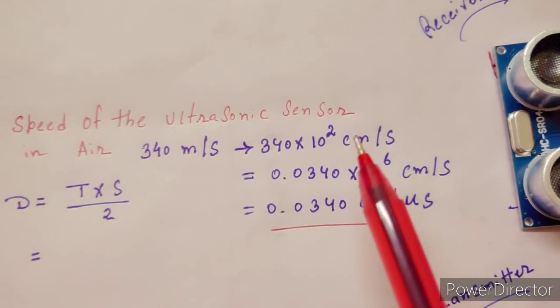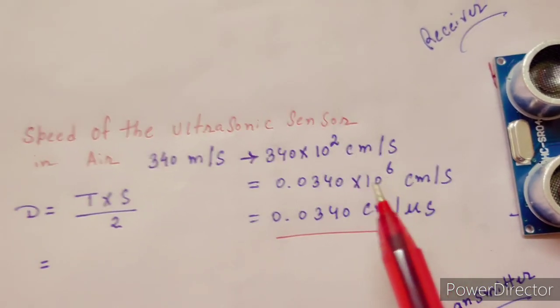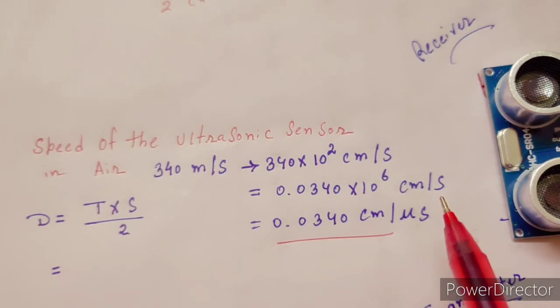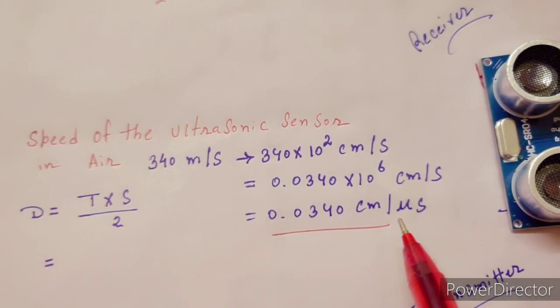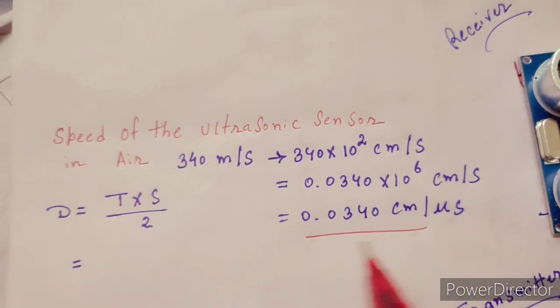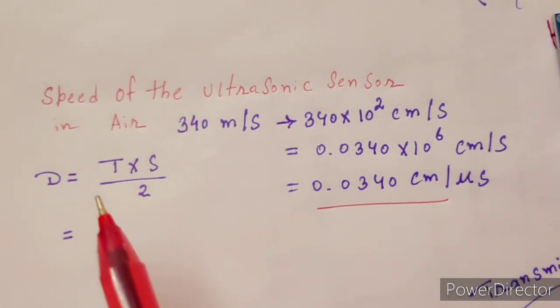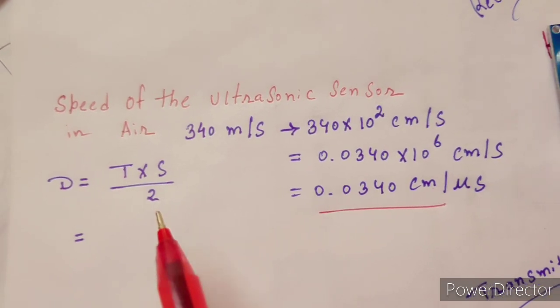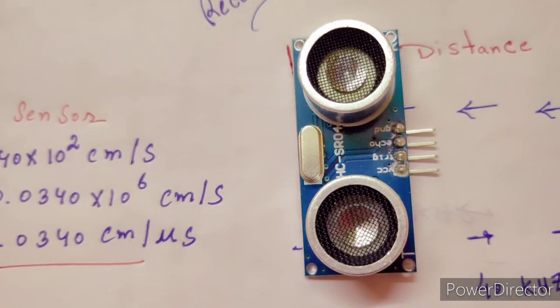So 340 times 10 to the power 2 centimeters per second, which equals 0.0340 times 10 to the power 6 centimeters per second, which equals 0.0340 centimeters per microsecond. We have to put the value here: D equals T times 0.0340 divided by 2.